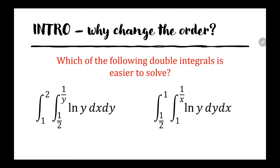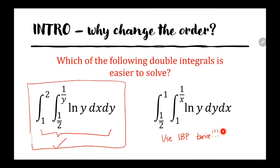Here's another set — which of these is easier to solve? The first option is easier. But why? If you try to solve the second integral, you will actually have to use integration by parts twice. That makes the first double integral easier to solve. So if you are given this kind of problem, do you want to use IBP twice, or do you want to change the order and have an easy solution? I would choose to change the order of integration.